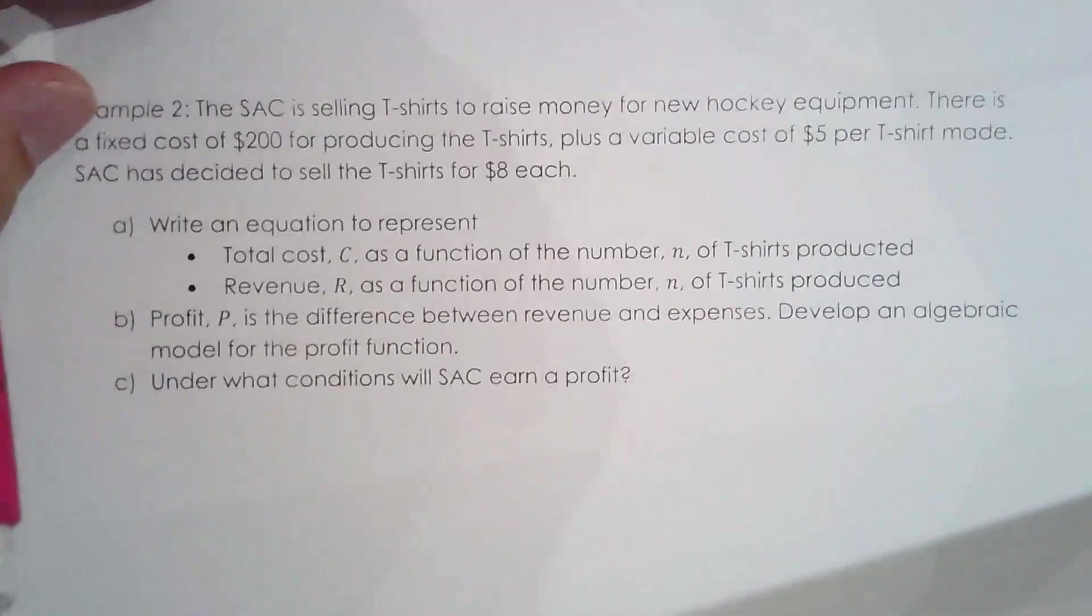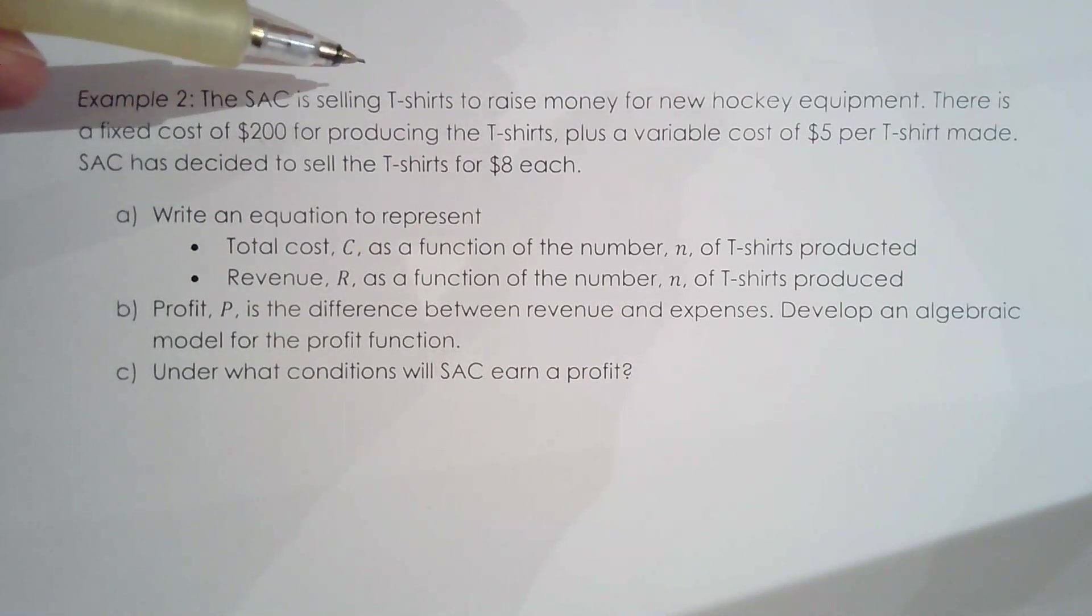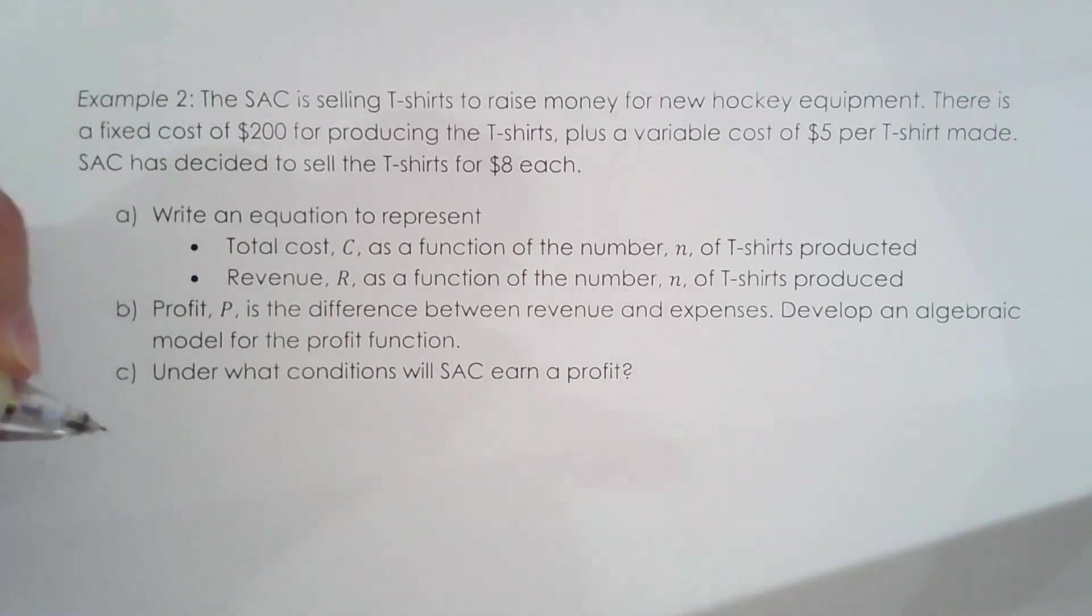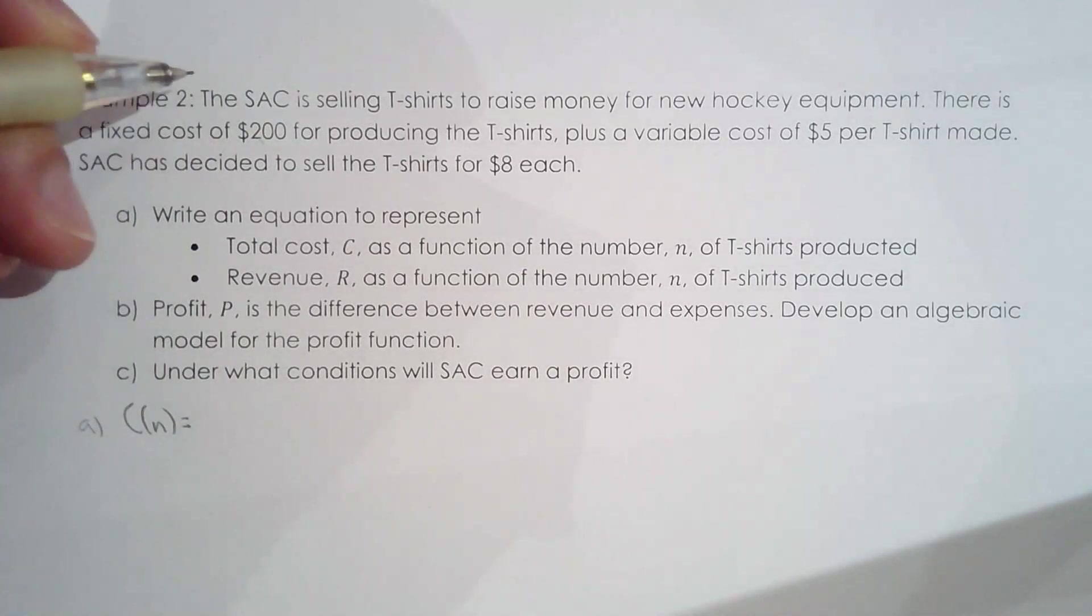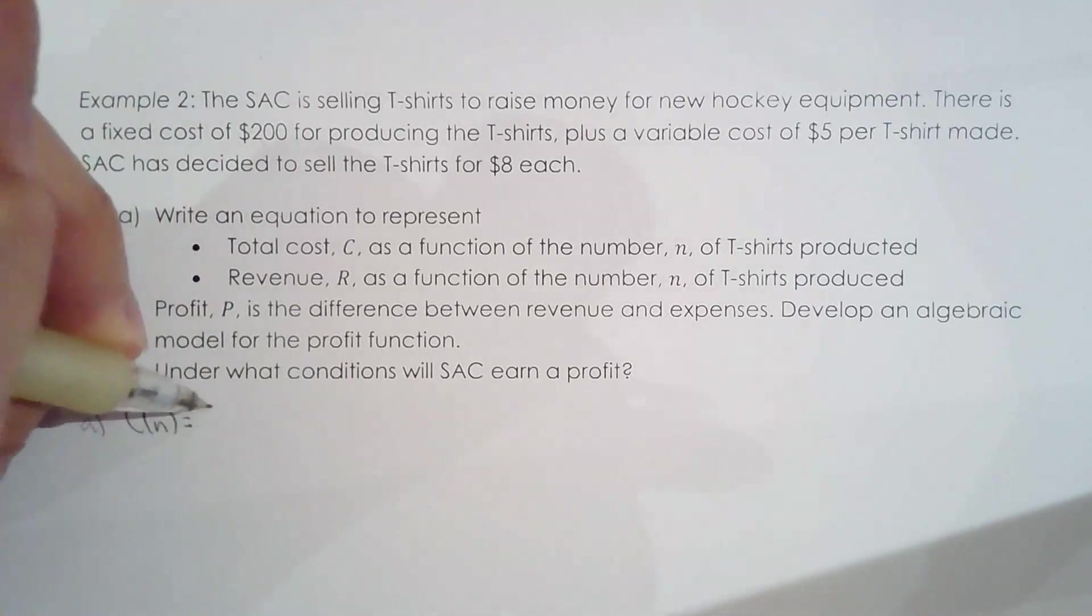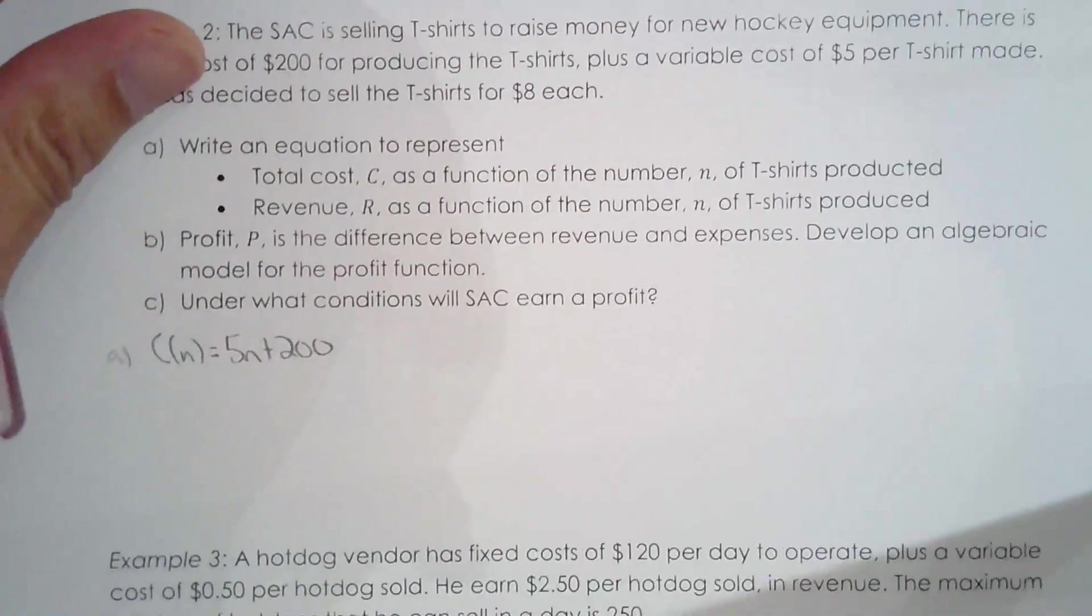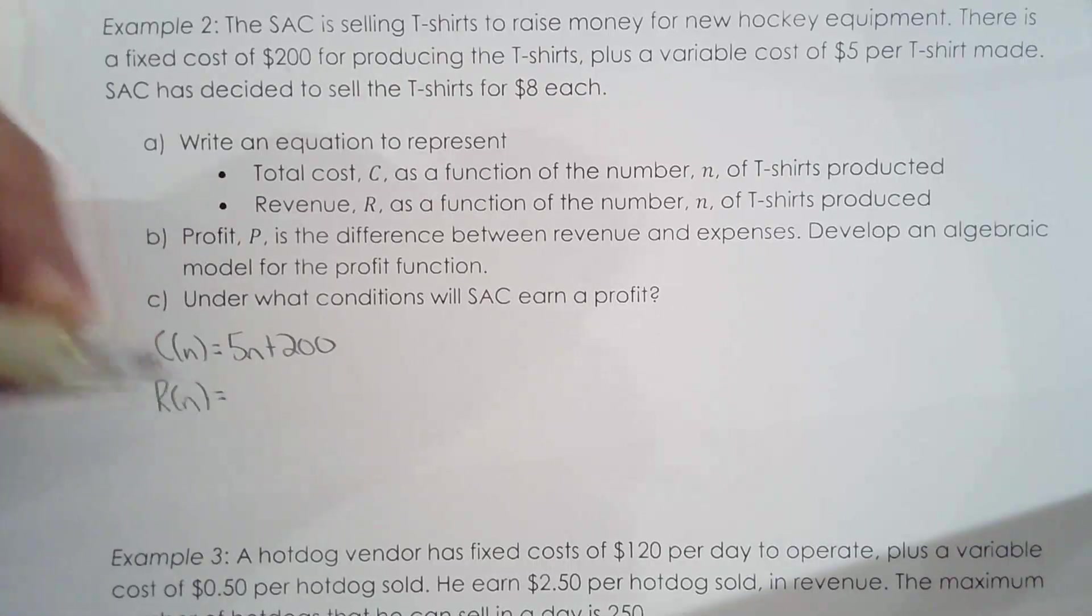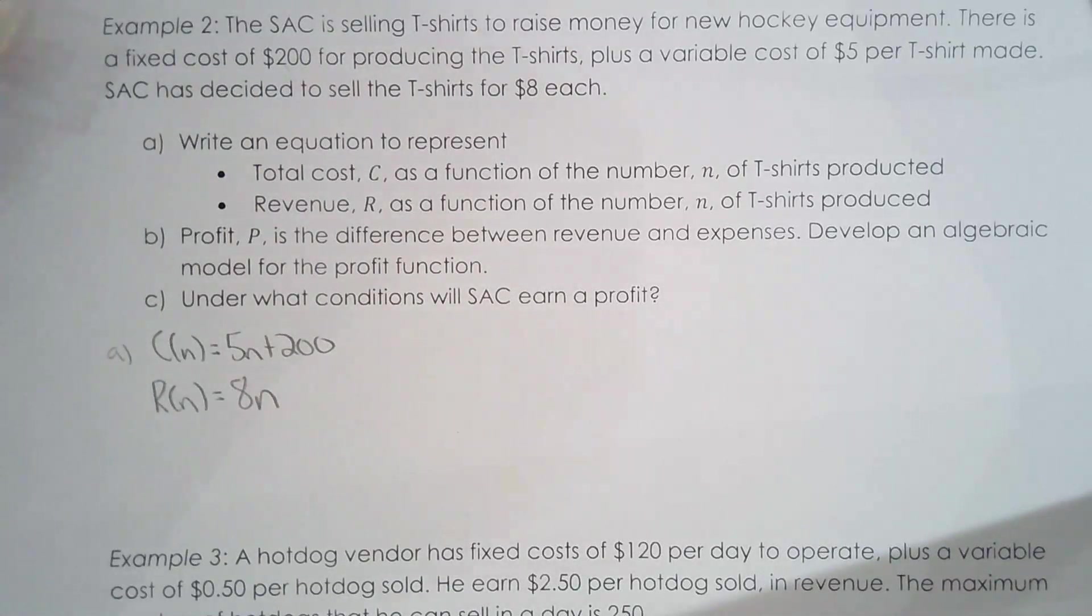Let's do some word problems. SAC is selling t-shirts to raise money. There's a fixed cost of $200 producing the t-shirts and a variable cost of $5 per t-shirt made. SAC is selling the t-shirts for $8 each. We're going to write a cost function. $200 fixed and $5 per shirt, so $5 per shirt plus a flat $200. The revenue function: you sell each shirt for $8. They're both pretty straightforward linear functions. That's grade nine when you have to model the linear relationship.